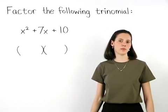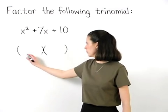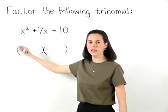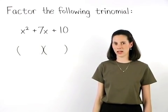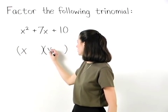So what goes inside the parentheses? Well, the first term in each binomial will be a factor of the x squared term, and since x squared factors as x times x, we use an x as the first term in each binomial.